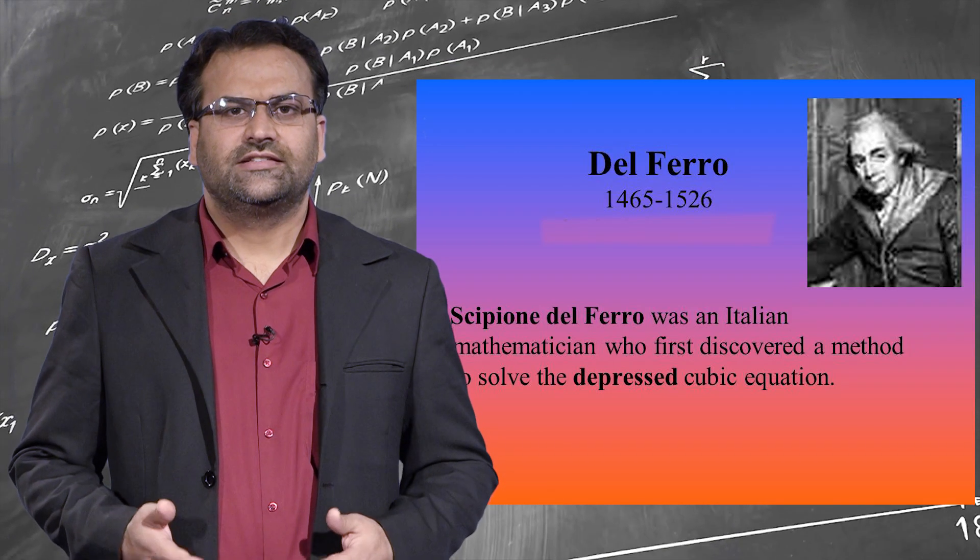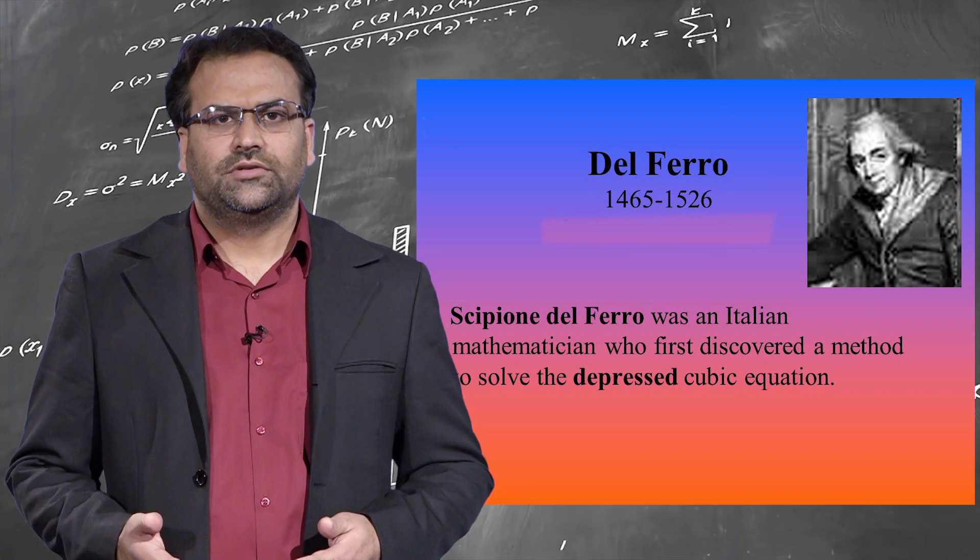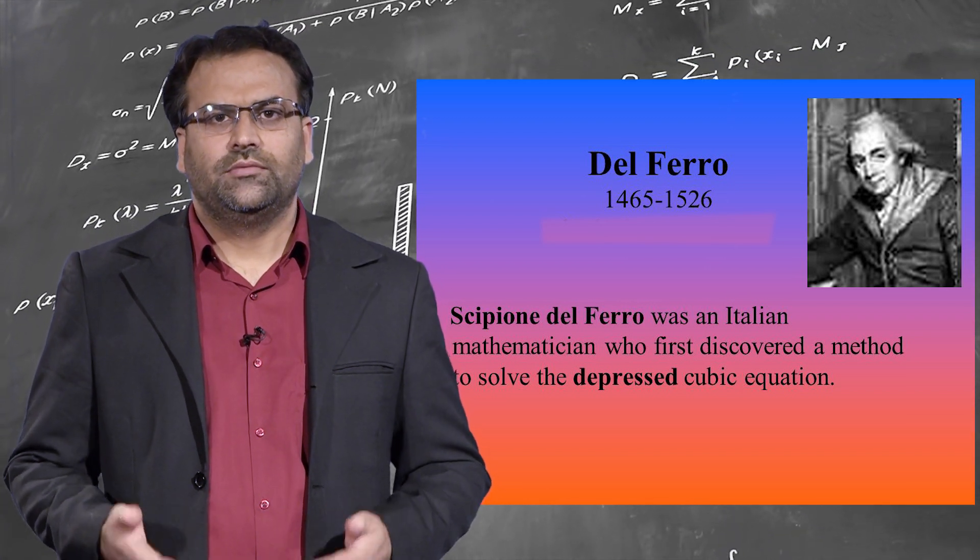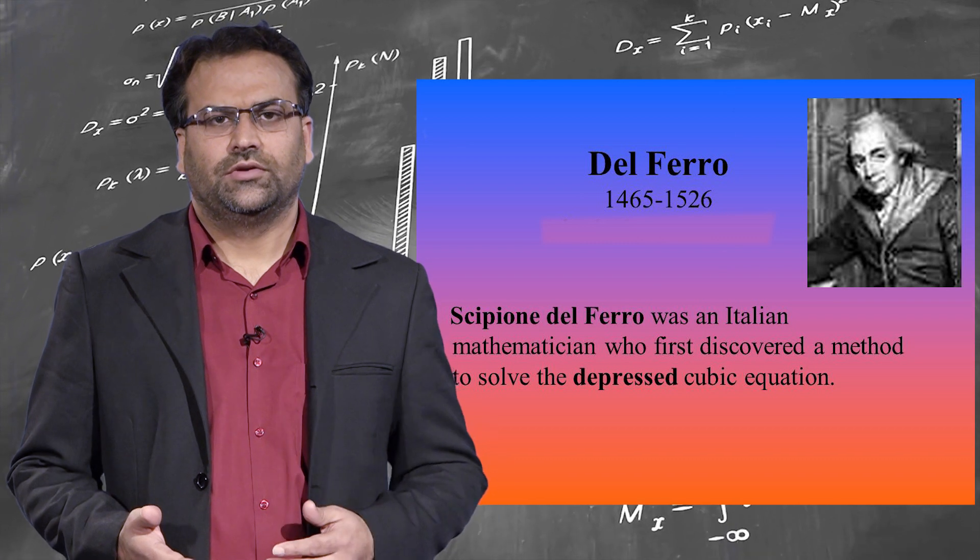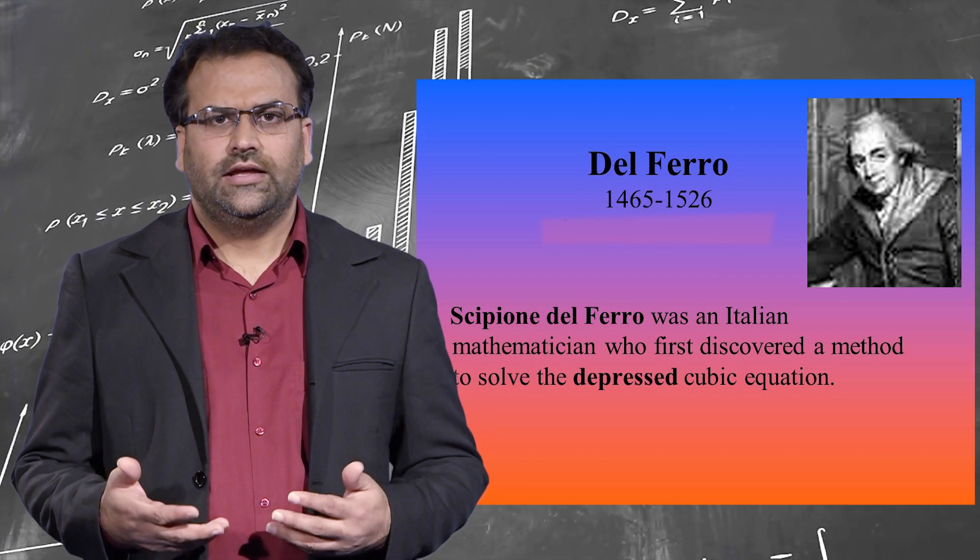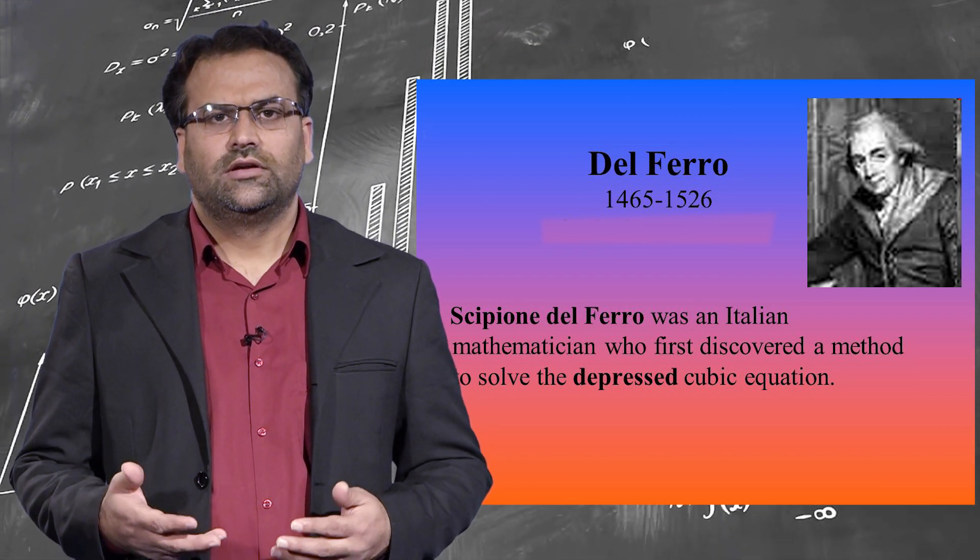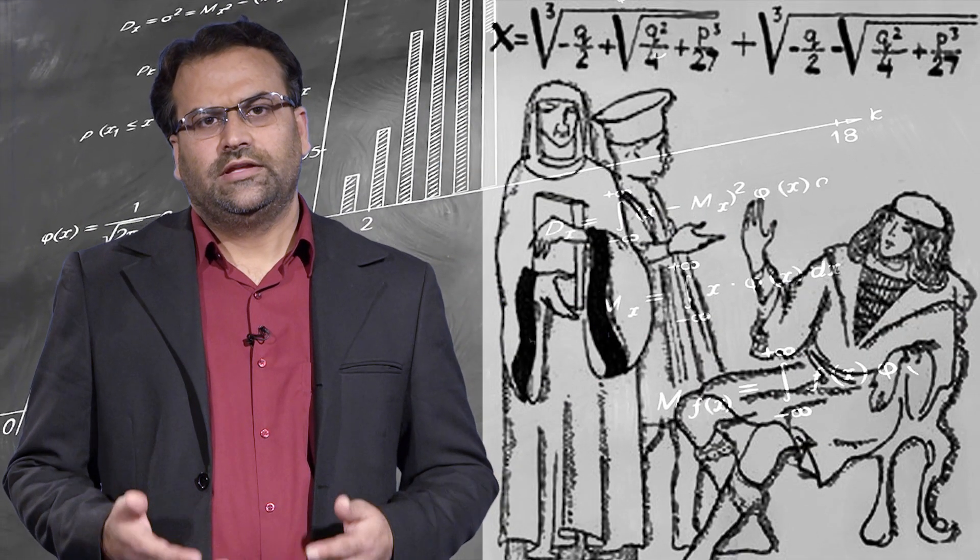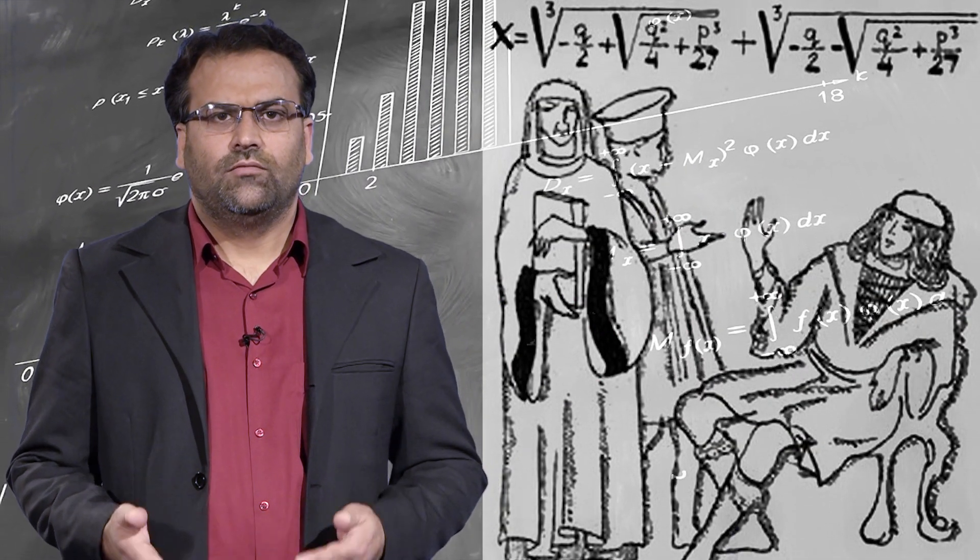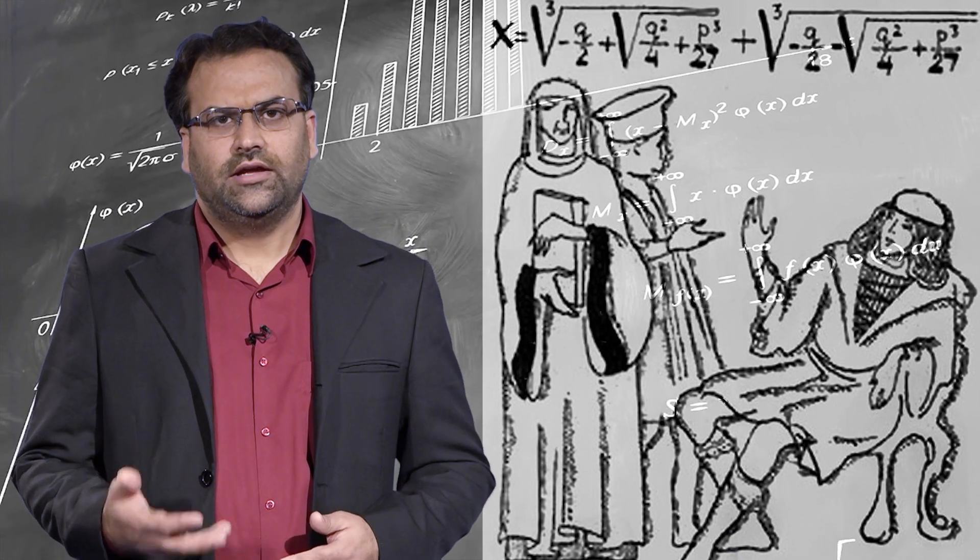One of the champions of these math duels was an Italian mathematician, Del Ferro, in the beginning of the 16th century. Del Ferro knew a general formula to solve certain cubic equations. And with the help of that formula, he won many competitions in his life.